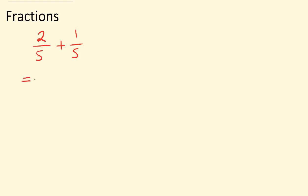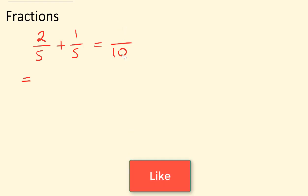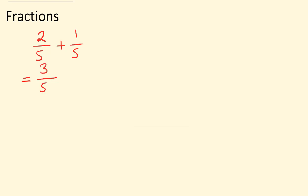Therefore we can add the numerators. Now a common mistake a lot of students make is by adding the denominators — they'll add five and five to get ten, and then two and three to get three over ten, thinking that was easy. But we do not do this. We are going to leave the denominators the same, and two and one is three.